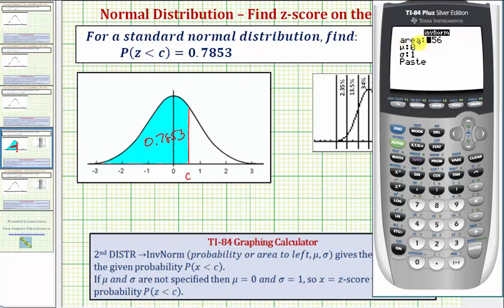First we're asked to enter the area, which is the area to the left of the z-score that we're looking for. We know it's going to be a z-score, not an x value, because we're going to use mu equals zero and sigma equals one. So the area is the same as the given probability of 0.7853.